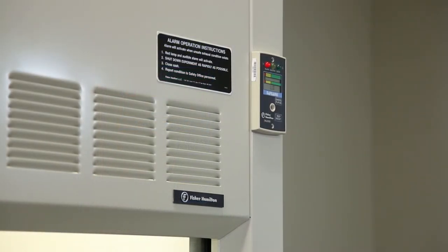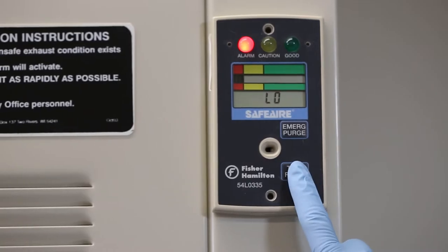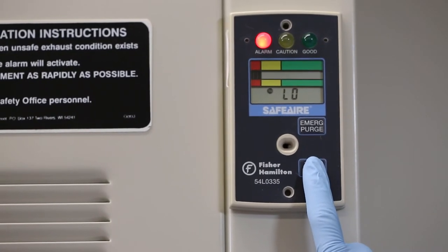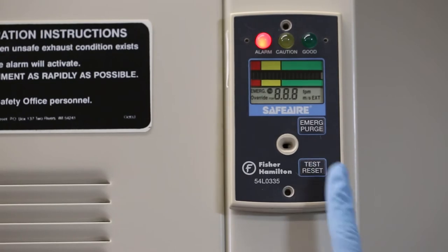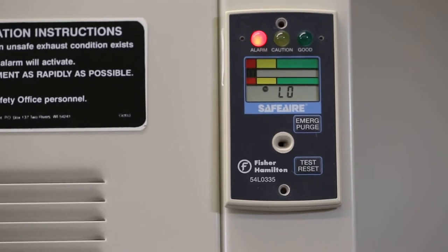To reset the alarm, press the reset button and hold it down for about 30 seconds. The display will light up with information, and then you can release the button.